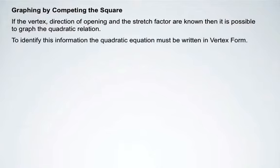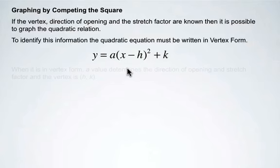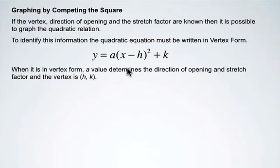To identify all this information, the quadratic equation must be written in vertex form. Here's vertex form. When it is in vertex form, a value determines the direction of opening and the stretch factor. And the vertex is h and k.